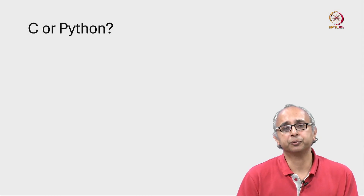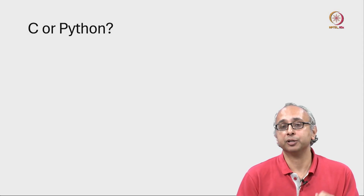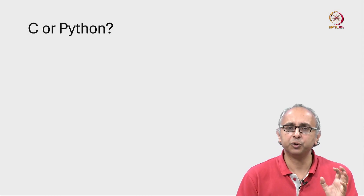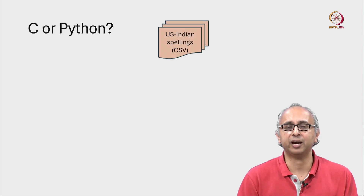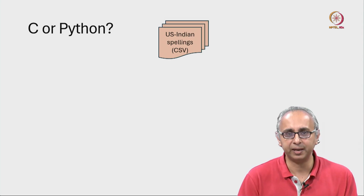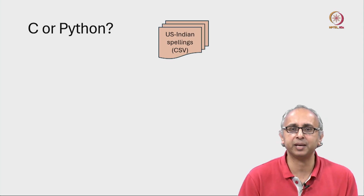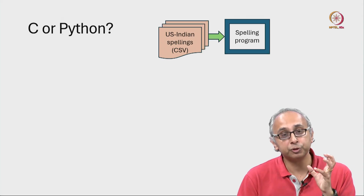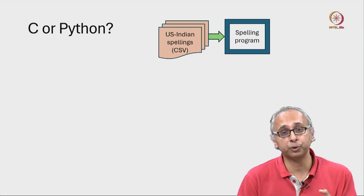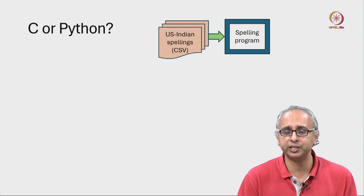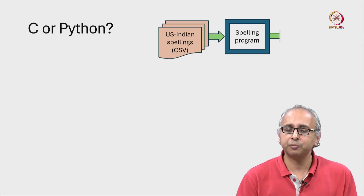So how should we go about writing our spelling program? We now know we want to have this CSV file which will contain these spellings — the US spellings and the Indian spellings. We want to read it into a fixed program which will maintain a dictionary data structure for efficiency.